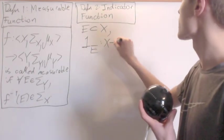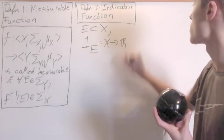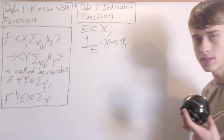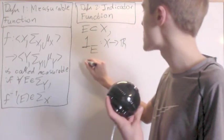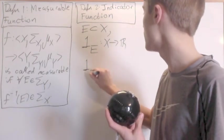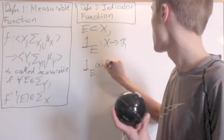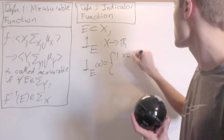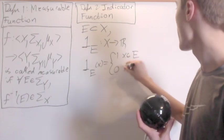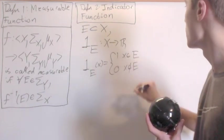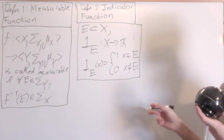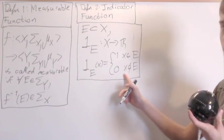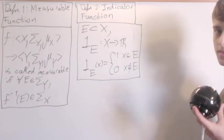One e brings you from x into the real numbers. And what you define it as is one e of x is going to be equal to one if x is in e and zero if x is not in e. This function just indicates whether or not x is an element of the set.